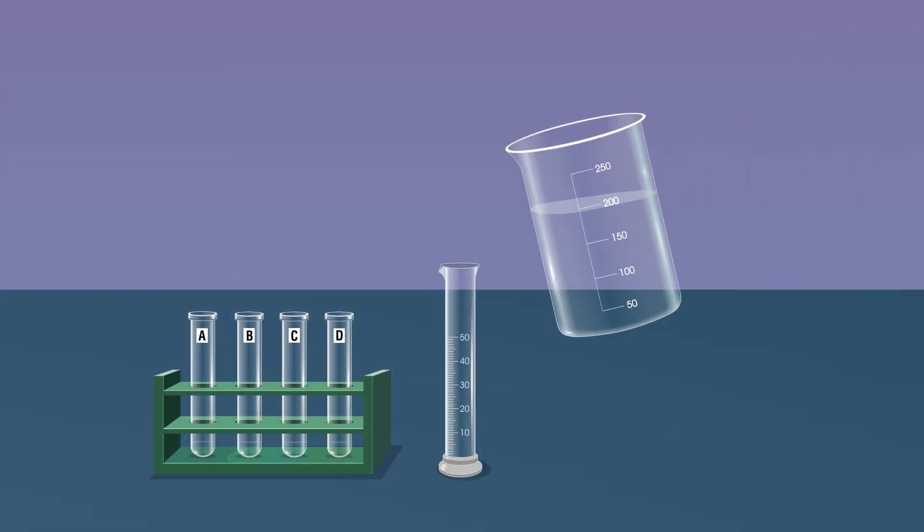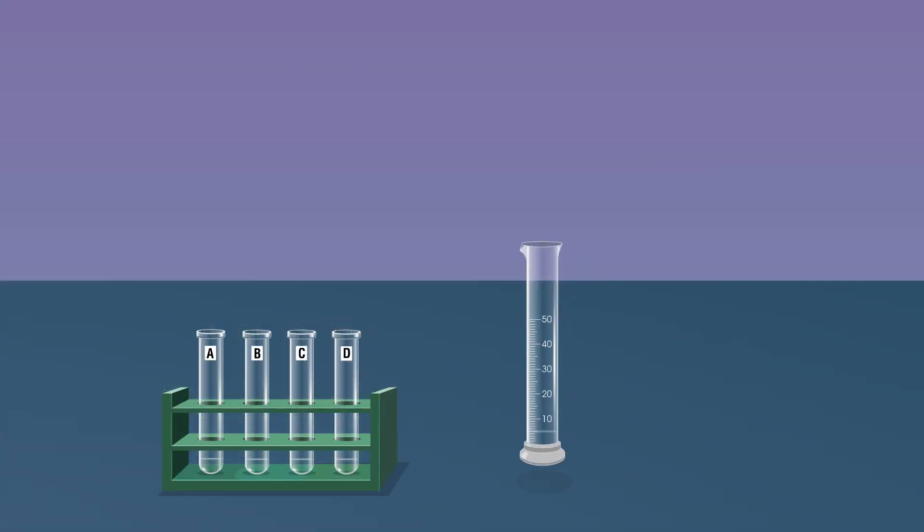Add 5 ml of distilled water from the 250 ml beaker to each test tube using a measuring cylinder.